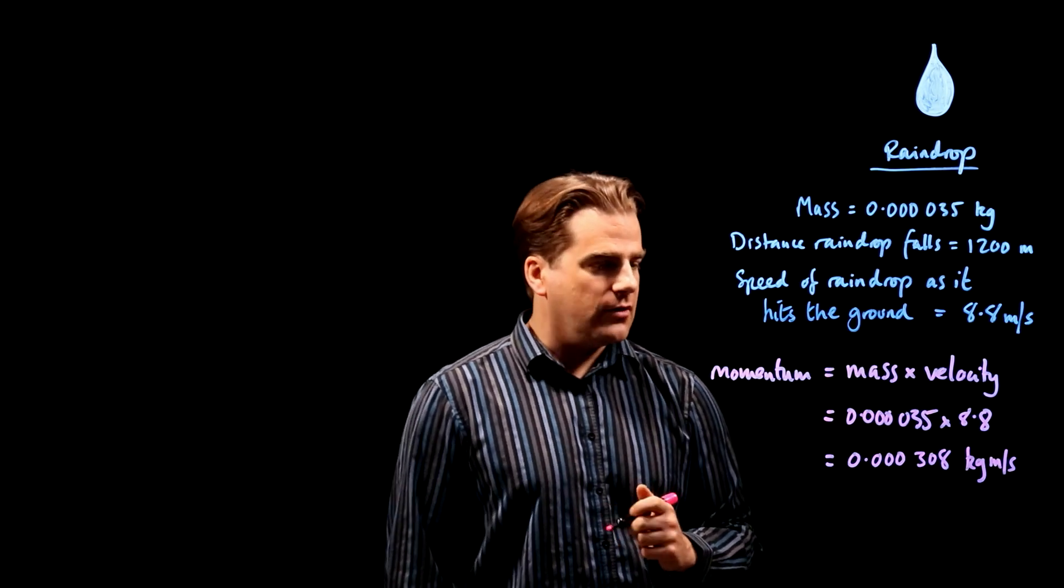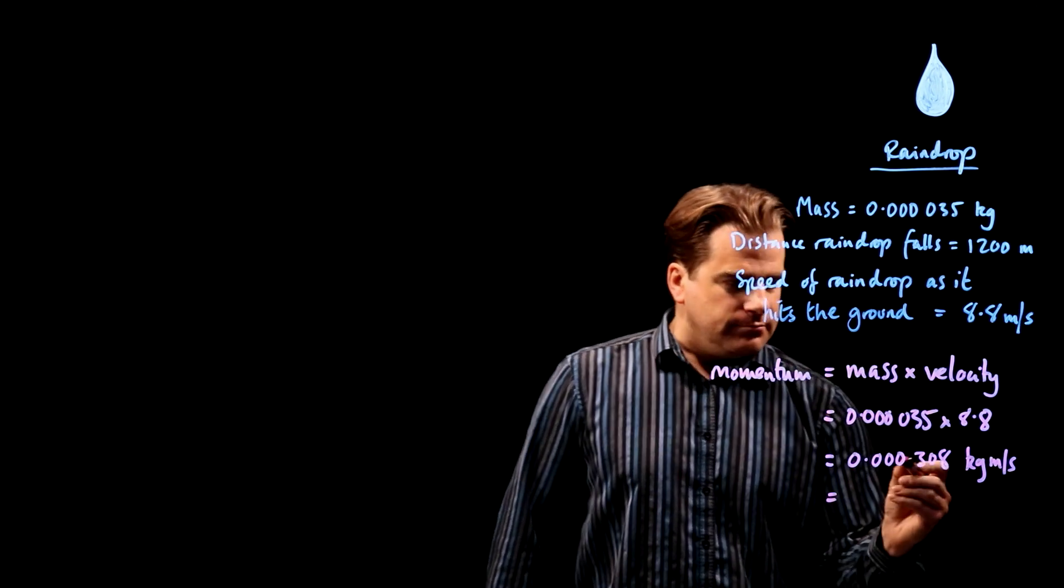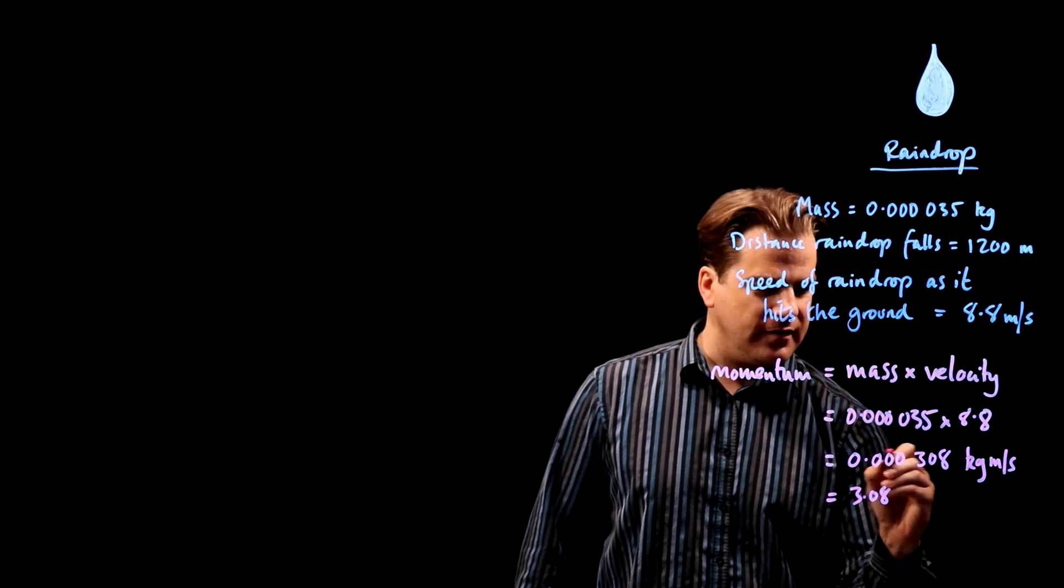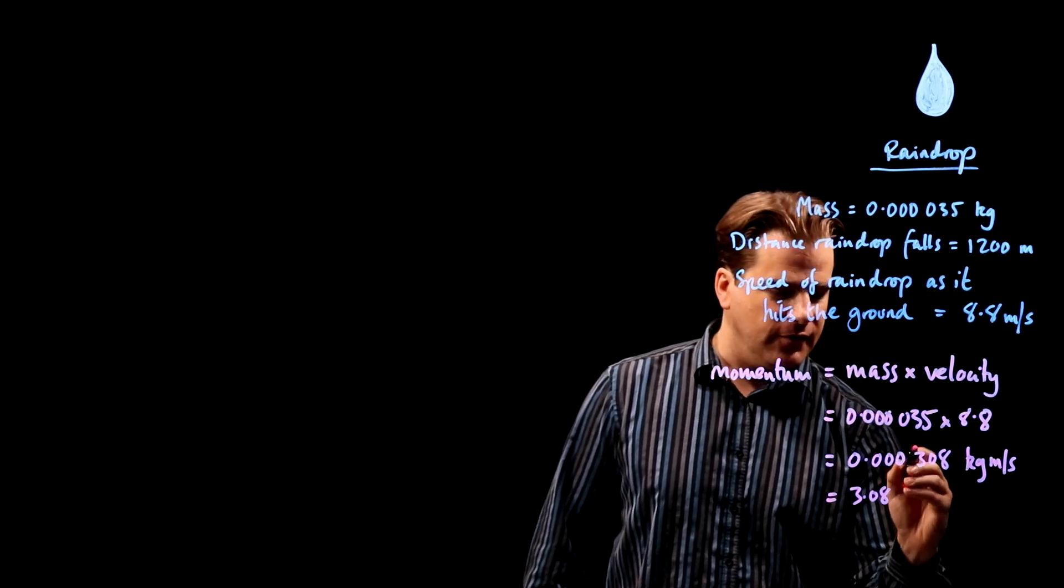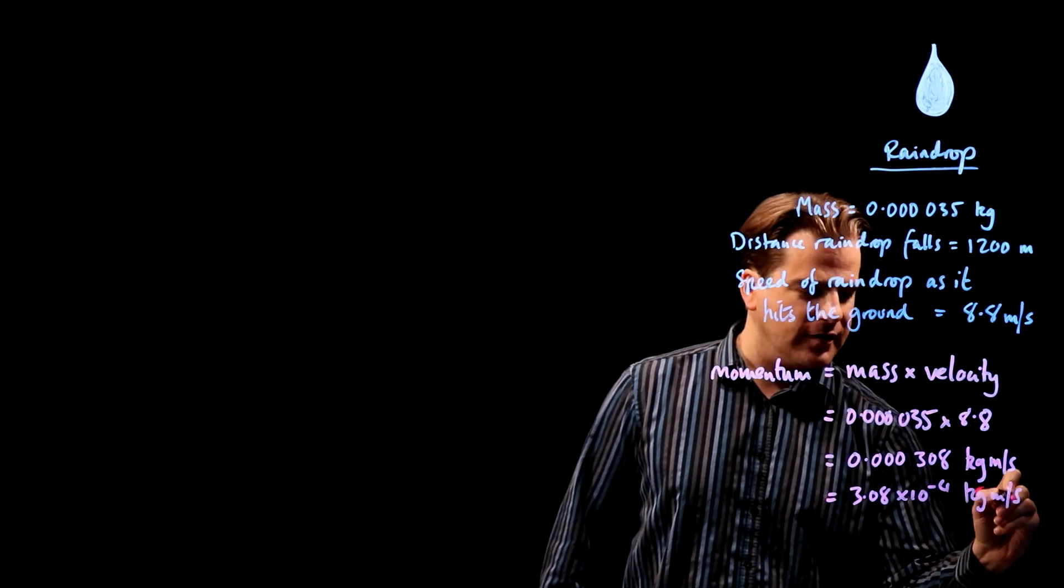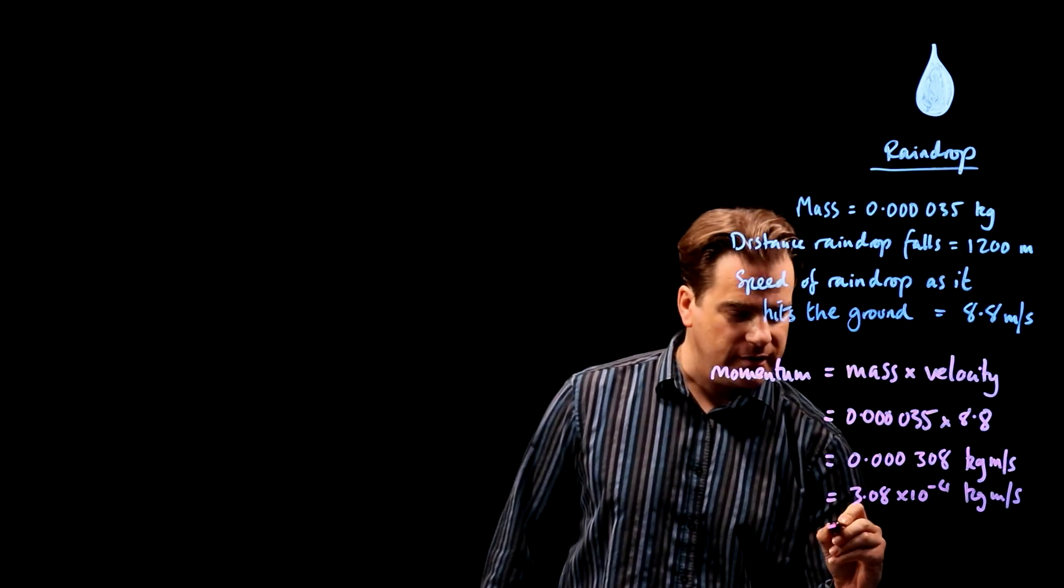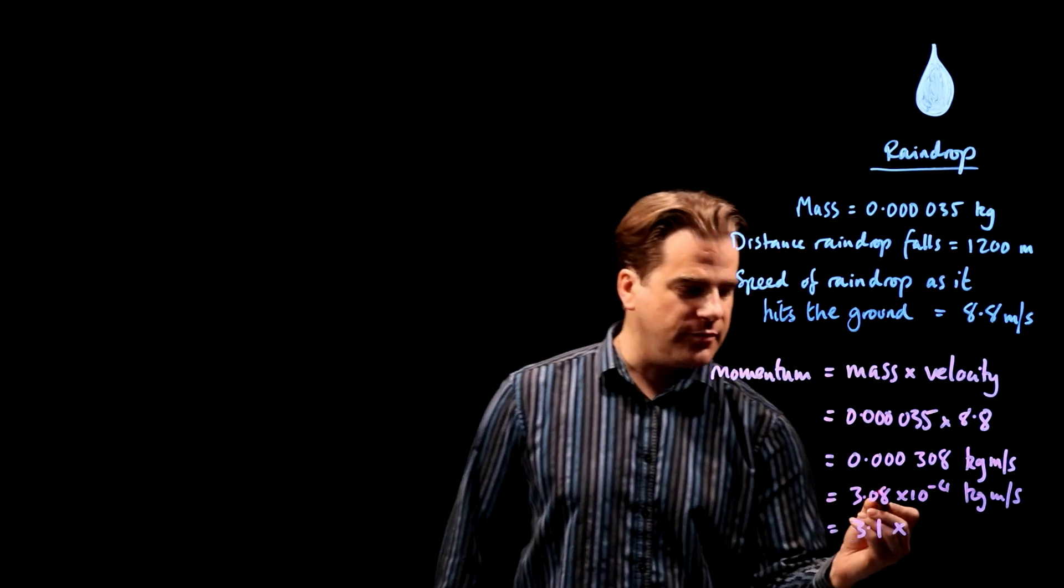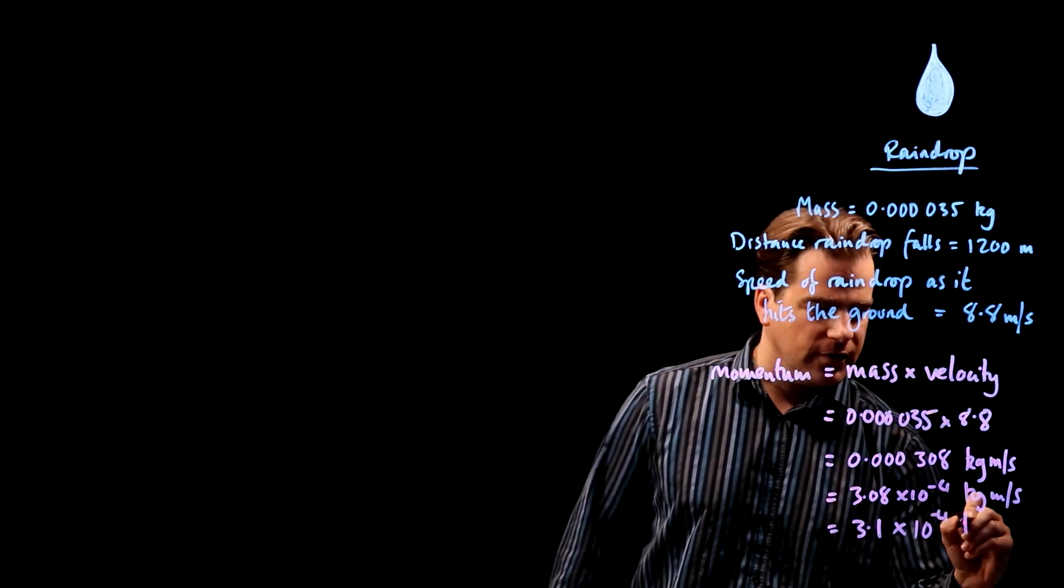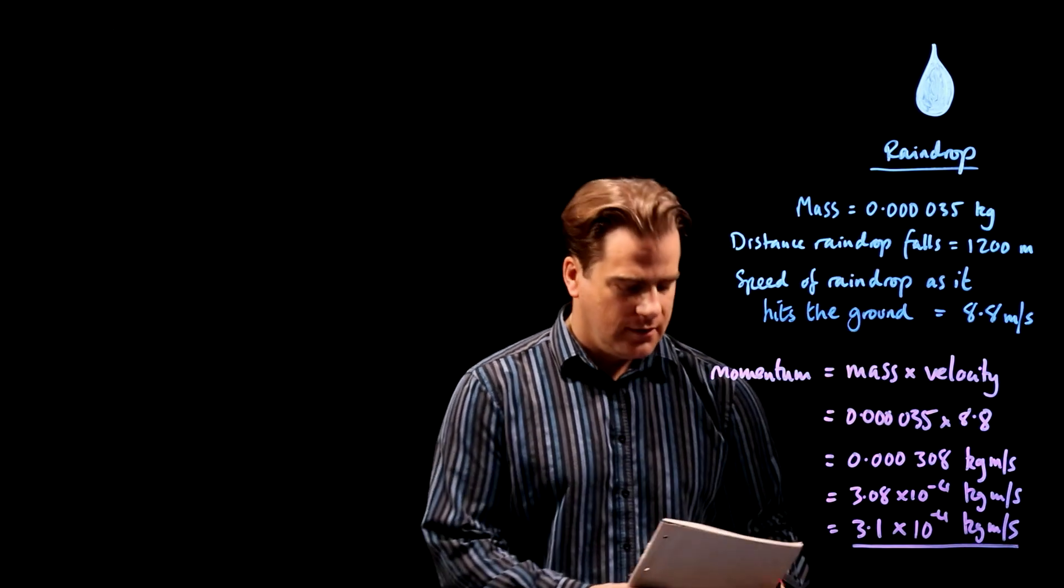Okay, good. Right, let's neaten this up. What's that? 3.08 times 10 to the minus 1, 2, 3, 4 kilogram meters per second, but you don't write standard form like that. You've only got to have one digit after the decimal, so that would be 3.1 times, the 8 pushes that up to a 1. 3.1 times 10 to minus 4 kilogram meters per second. Okay, good.